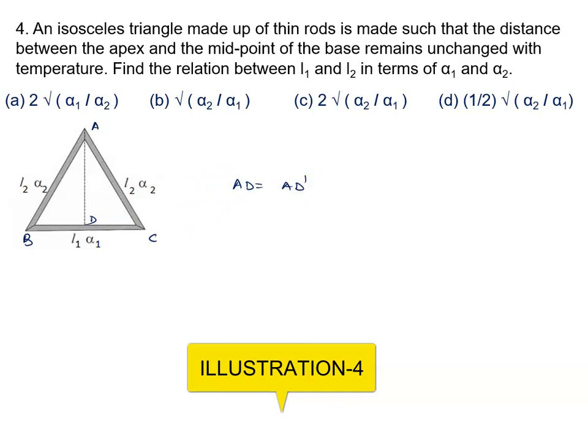What is the value of AD? AD is given by root of L2 square minus L1 upon 2 whole square, because this distance will remain L1 upon 2, and this is always constant. It should not change.